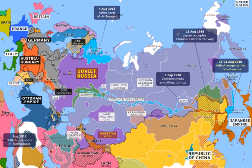General Wrangel reorganized his army in the Crimea; however, with the deteriorating situation, he and his soldiers fled Russia aboard Allied ships on 14 November 1920.